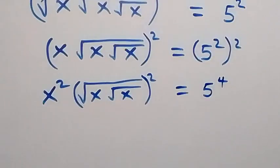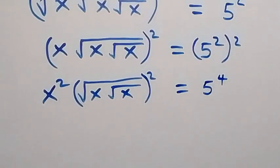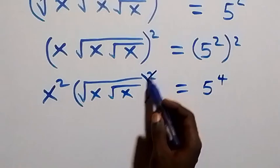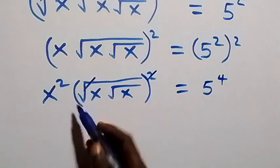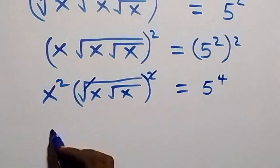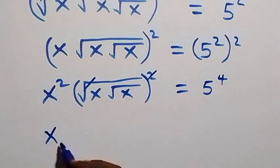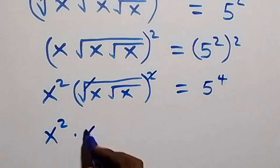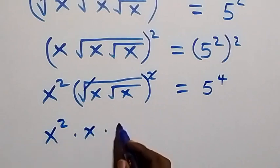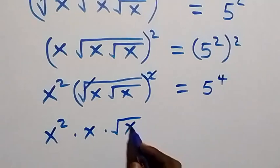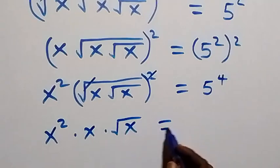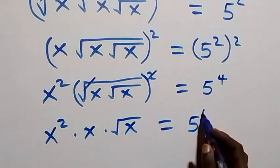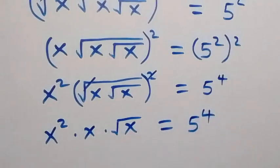From here, this square cancels the square root, and this gives us x squared times x times root x, then equals to 5 raised to power 4.